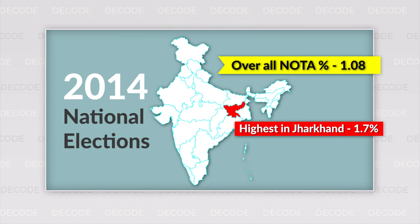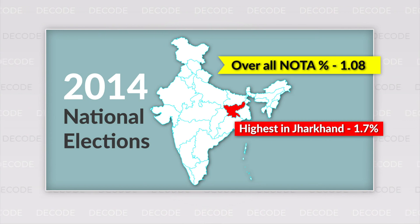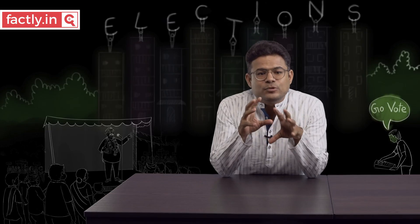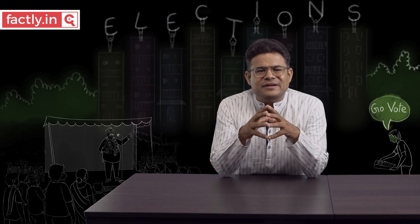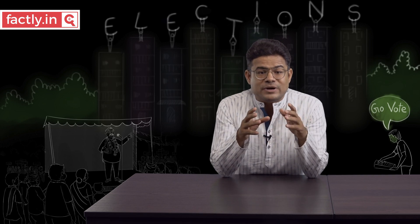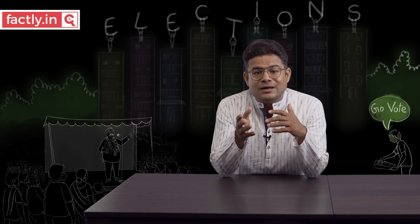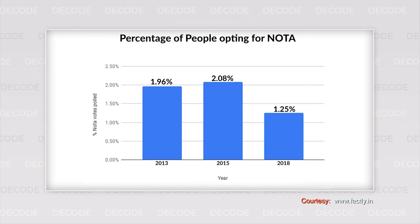After that, in the 2014 national elections, NOTA got 1.08% of votes, with the highest of 1.7% in Jharkhand. When NOTA usage data was further analysed, there were quite disappointing insights. First, the percentage of people opting for NOTA has been declining. In the beginning of 2013, 1.96% of people opted for NOTA.